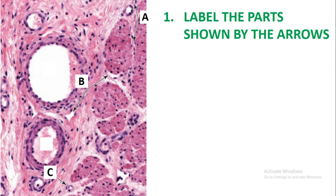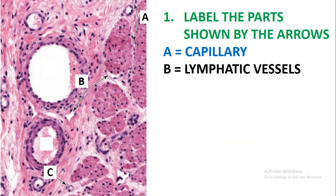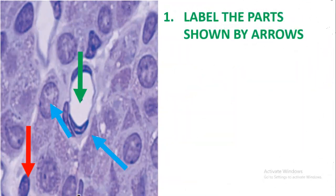Label the parts shown by the arrows. Arrow A is showing the capillary, B is showing the lymphatic vessels, and C is showing the venules.